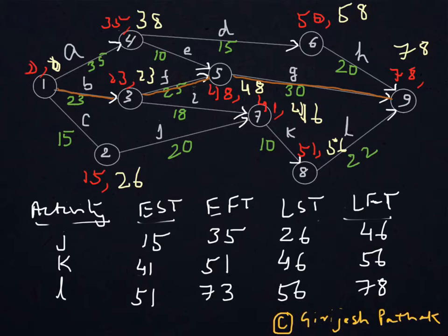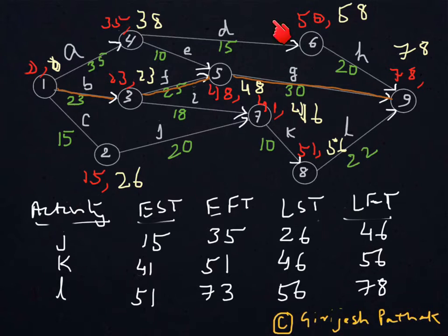In this project there are activities A, B, C up to L, and they are related with each other in such a way that this activity-on-arrow network diagram represents their relationship. In previous videos you have seen how we can do the event-based analysis, like finding the earliest time and latest time at all these nodes.